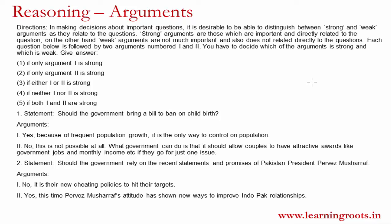Option 3 is very important — 'either 1 or 2 is strong.' Generally, the statement will be followed by two arguments and sometimes they are contrasting. So if the question is 'should you be admitted to your dream institute?' and one argument says yes because you worked very hard, and the other says no because you haven't — if both arguments are balancing and opposite of each other, then you will mark 'either 1 or 2 is strong.' But if both arguments point towards the same thing — for example, both say yes, one because you worked hard and another because you took 20 mocks — then you say 'both 1 and 2 are strong.'